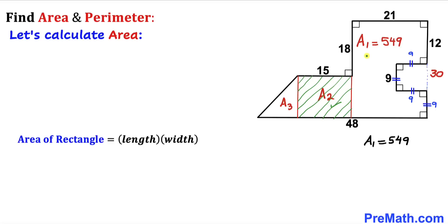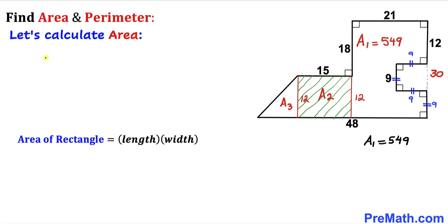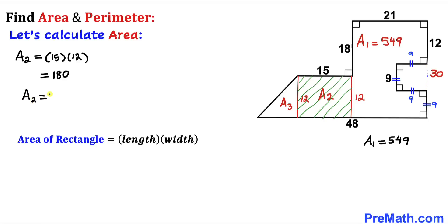Now let's calculate area A₂ of this rectangle. We know the whole length is 30 units and this length is 18, so therefore this side is 30 minus 18, which gives us 12. For rectangle A₂, the length is 15 and the width is 12. Multiplying: 15 times 12 gives us 180. Therefore A₂ turns out to be 180 square units.